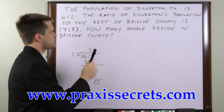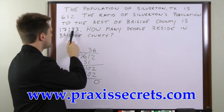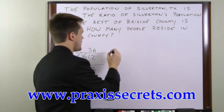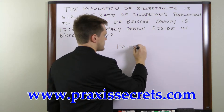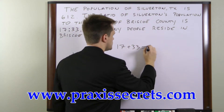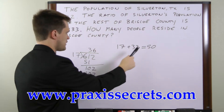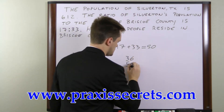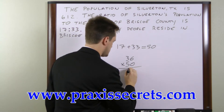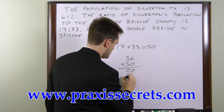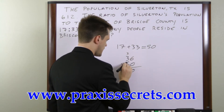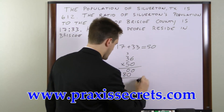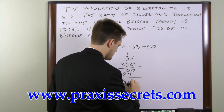Now to figure out how many people live in the county, we're going to add the two ratio numbers together and then multiply that number by 36. So we have 17 plus 33, which equals 50. Now we multiply 50 by 36. 5 times 6 is 30, so we write 0 and carry the 3. 5 times 3 is 15, plus 3 is 18. So we have 1,800 people.